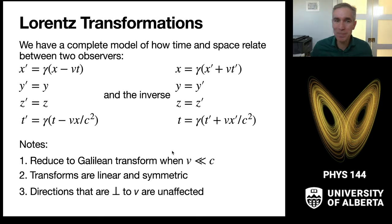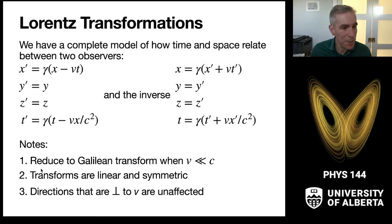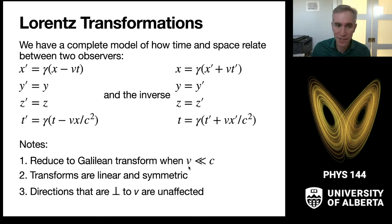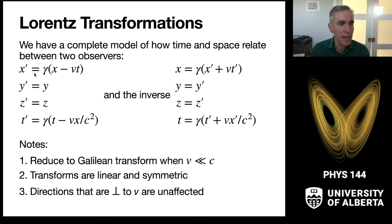The Lorentz transformations are highly symmetric. The directions perpendicular to v are unaffected by relativistic effects. So the full set is: x prime equals gamma(x minus vt), y prime equals y, z prime equals z, and t prime equals gamma(t minus vx over c squared). This is named the Lorentz transformation after the person who worked it out.